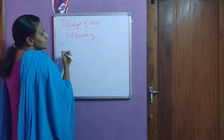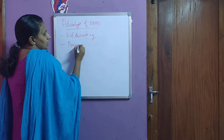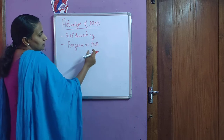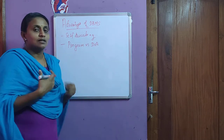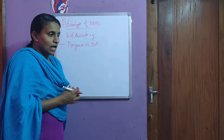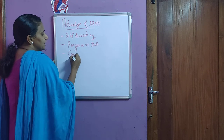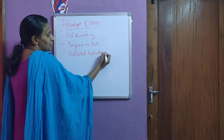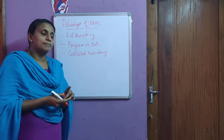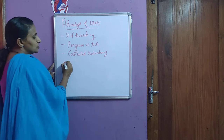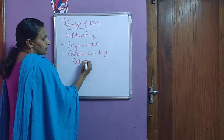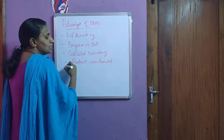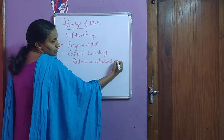The second advantage is a clear separation between program and data. If this separation exists, we can always distinguish between the program and the data — data is applicable at the user level and programs at the application level. The third advantage is controlled redundancy. Unlike traditional file processing, in DBMS there is a controlled approach to redundancy, and we can also restrict unauthorized access to the database.